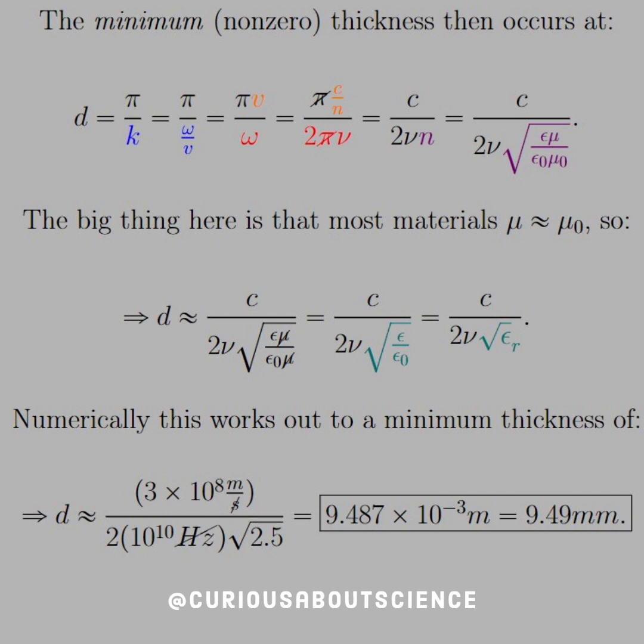So numerically, we just need to work this out. d is equal to 3 times 10 to the 8, speed of light, we know this. The nu is equal to, since it's gigahertz, it's 10 to the 10. And we have the dielectric constant was 2.5.